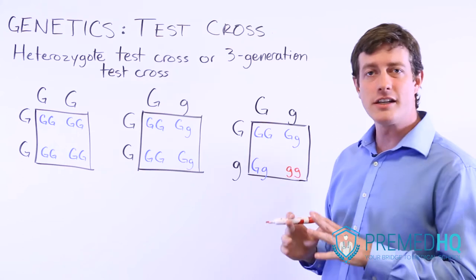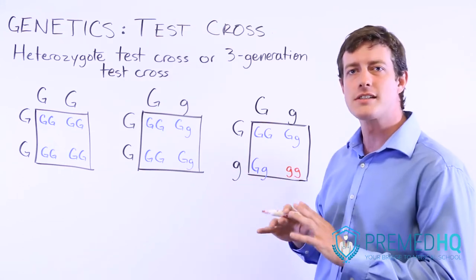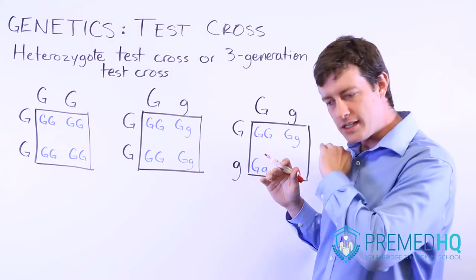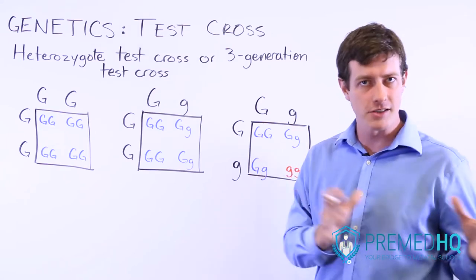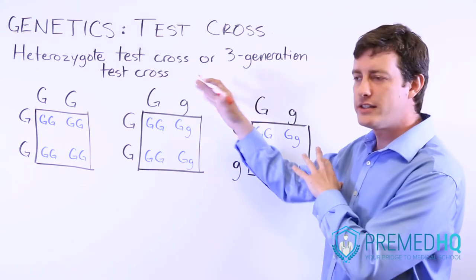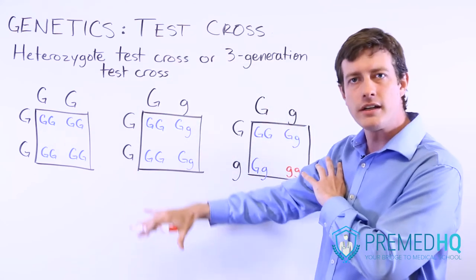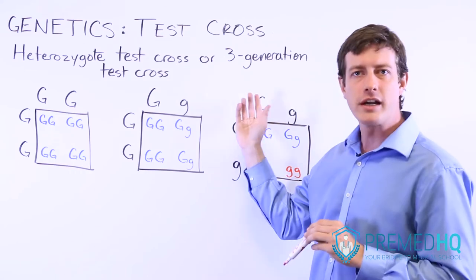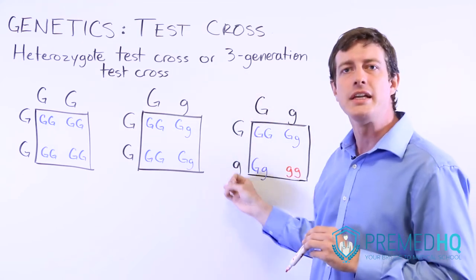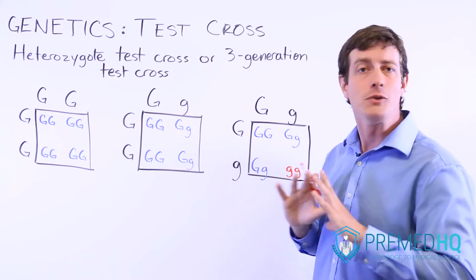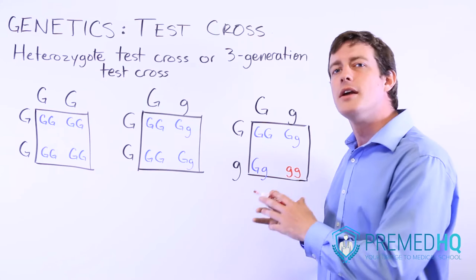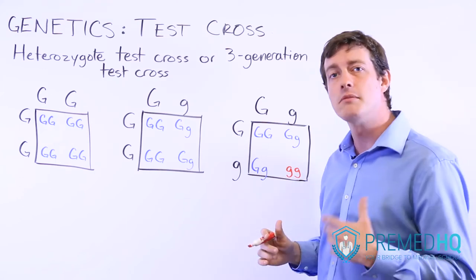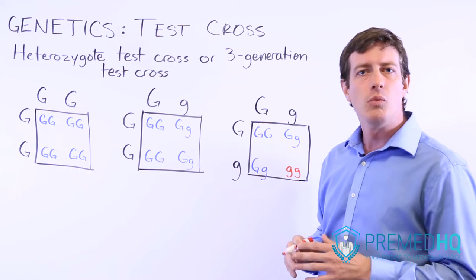Your typical test cross involves crossing some organism with an unknown genotype — usually showing a dominant phenotype — with something that is a known homozygous recessive. If the parent is homozygous dominant, all offspring of the test cross will have the dominant phenotype. If the parent is heterozygous but shows that dominant phenotype, the offspring will be half dominant and half recessive. That's why you cross with homozygous recessive: it makes it much easier to determine the parental genotype. However, there is also value in doing test crosses with heterozygous organisms.